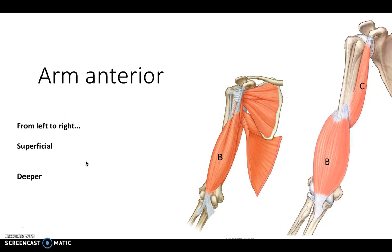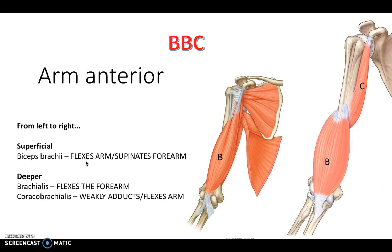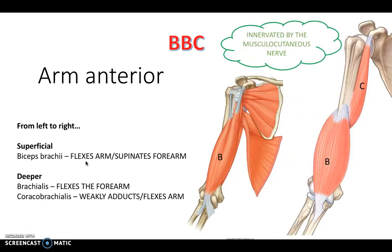Let's start with the upper limb. Thinking about our arms, we have the top and bottom - the arm and the forearm - and anatomically we have anteriorly and posteriorly. In the arm anteriorly, the upper arm anteriorly, there are three muscles to be aware of. Superficially we have the biceps brachii, a double-headed muscle that flexes the arm and supinates the forearm. We also have brachialis and coracobrachialis, which are slightly deeper in the anterior arm. All three muscles are innervated by the musculocutaneous nerve.